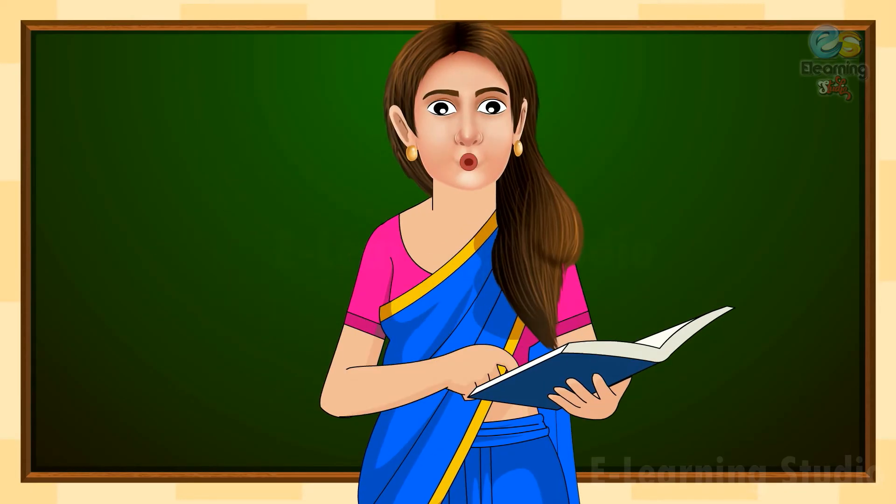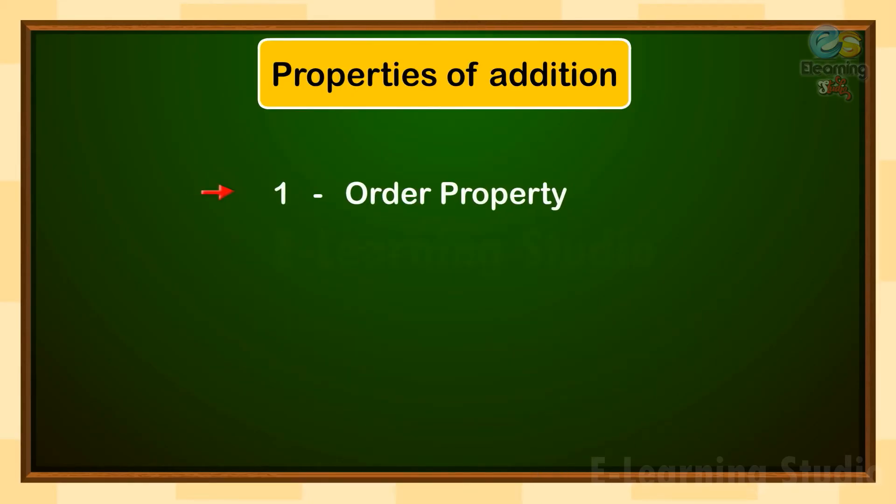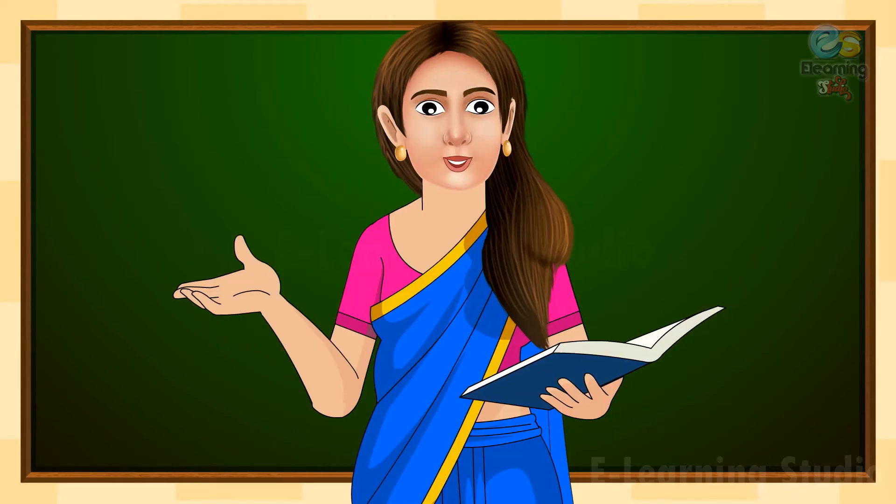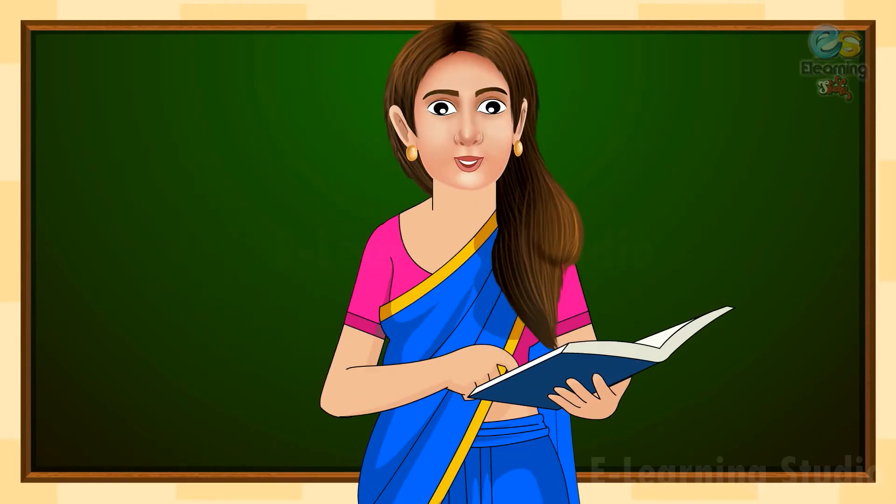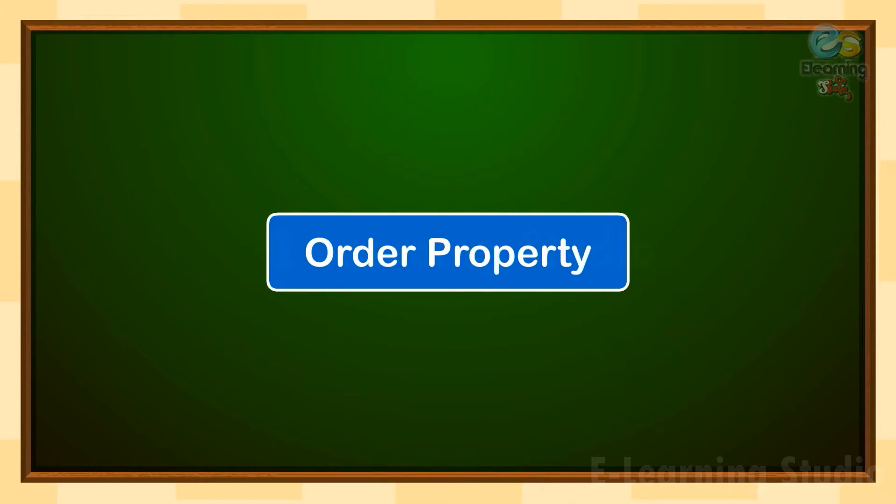Kids, in today's video, we will learn three properties of addition. First is Order Property, second is Grouping Property, and the last one is Zero Property. So, let's start with our first property which is Order Property.